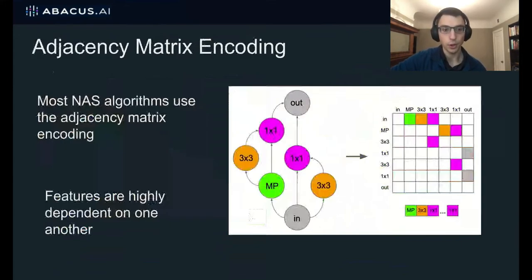As I explained before, the architectures are in the form of a DAG-based structure. And most NAS algorithms use the adjacency matrix encoding, where we have a feature for each edge as well as a feature for the operations on each node. But this is a challenging data structure for neural predictors to interpret. And this is because the features are highly dependent on one another. For example, the feature that represents an edge from the input to the middle one by one convolution has no effect on the final accuracy unless we also have a feature from the one by one convolution to the output. Otherwise, it'll just be a dead end path that doesn't affect the accuracy.